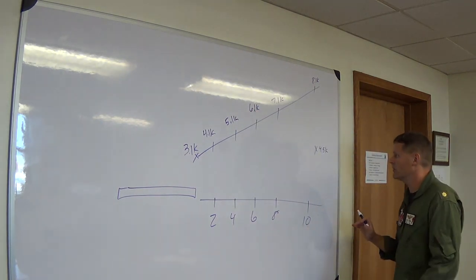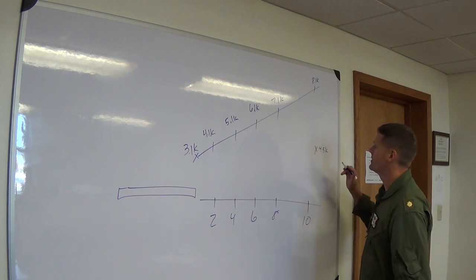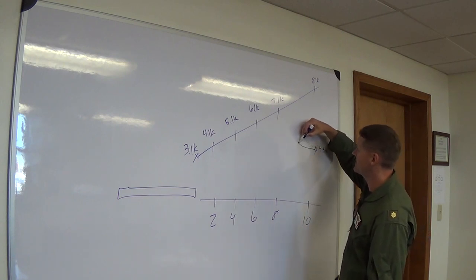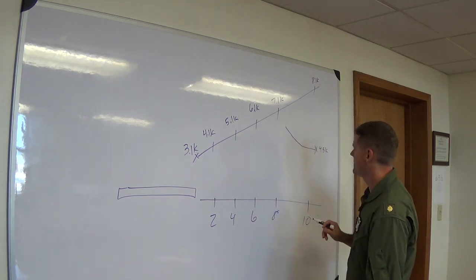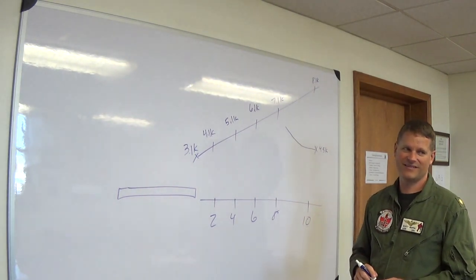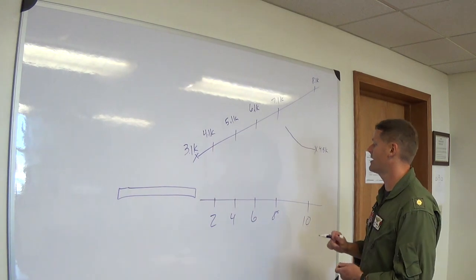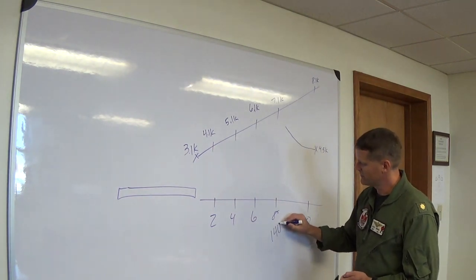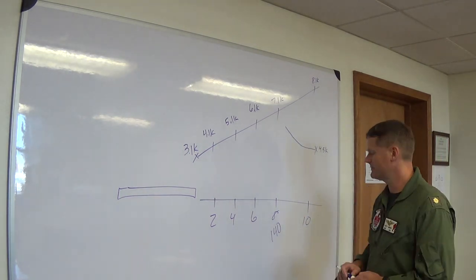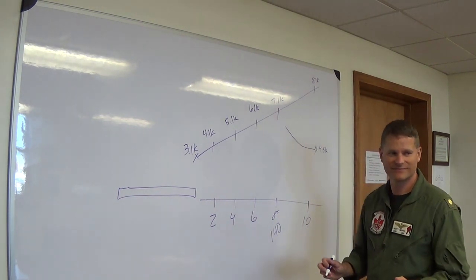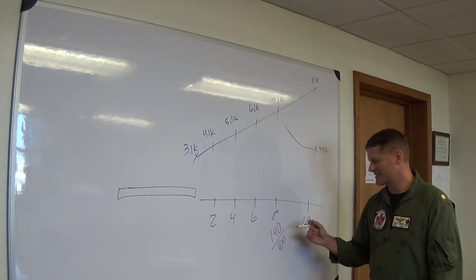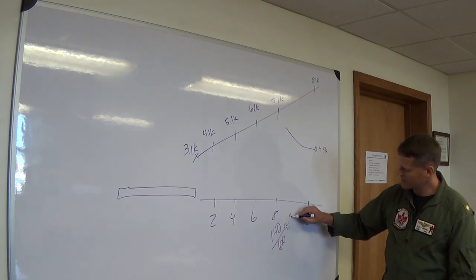Here I am at 4,500 feet on course rules and I get that chip light. Procedure: turn, climb, clean, check. What airspeed am I climbing at? Climb rate is 140 knots. So approximately how many miles am I going a minute? A little over 2 miles a minute. 60 miles per hour is 1 mile a minute, so 140 is approximately 2 miles a minute.